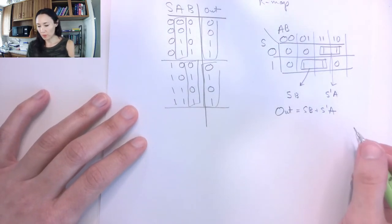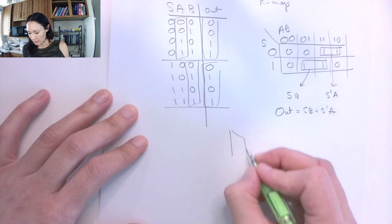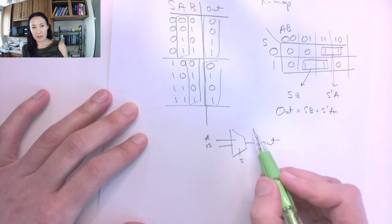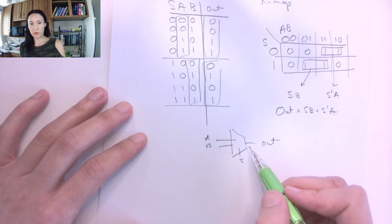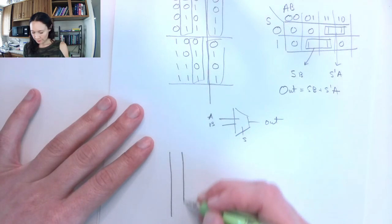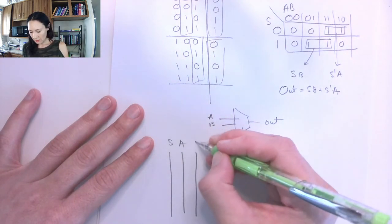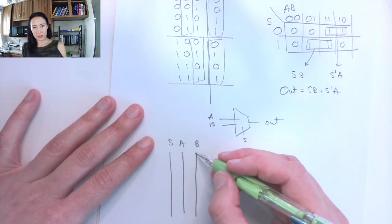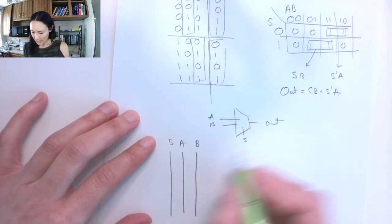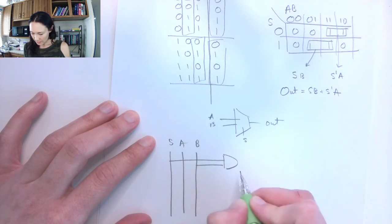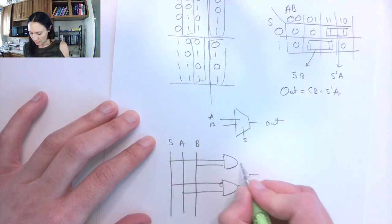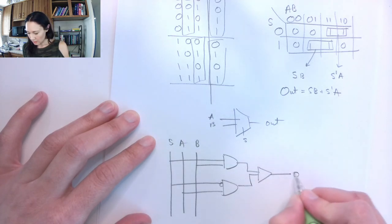We can make the actual circuit for the multiplexer. The symbol looks like this, where a and b are data inputs, s is the select, and this is out. But this is just an abbreviated version for the digital logic circuit. If we have inputs select, a, and b — these are our data inputs that are going to be piped out, and select is used for switching between them — the first gate ANDs s and b together, the next ANDs s-not with a, and then we OR these together to get our output.